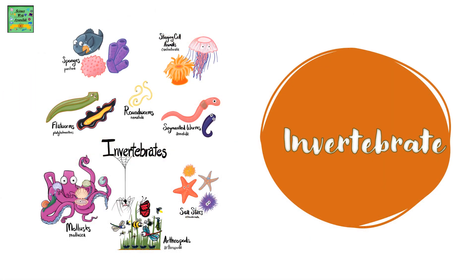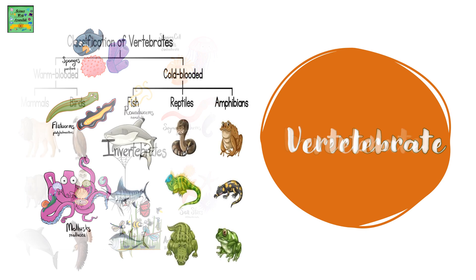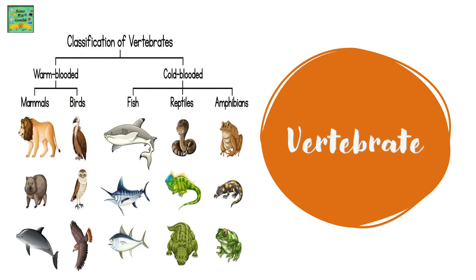Invertebrates and vertebrates. Classification of vertebrates: warm-blooded animals are mammals and birds. Cold-blooded animals are fish, reptiles and amphibians.